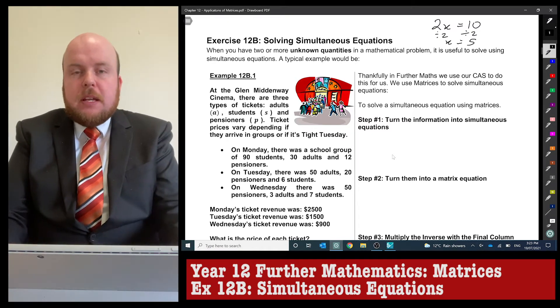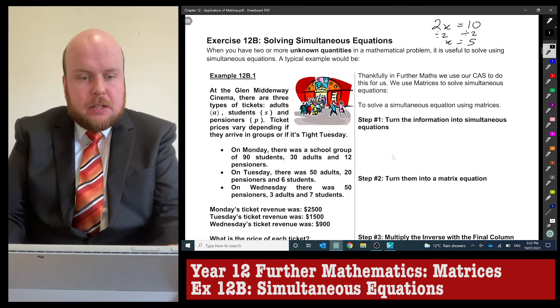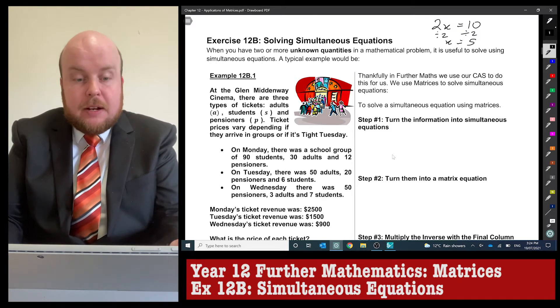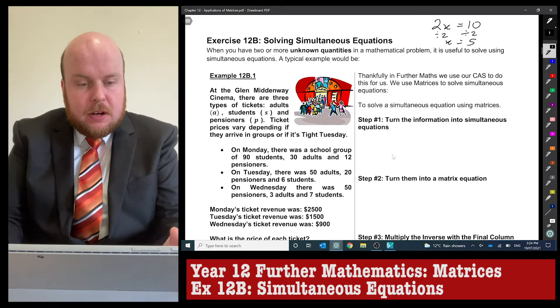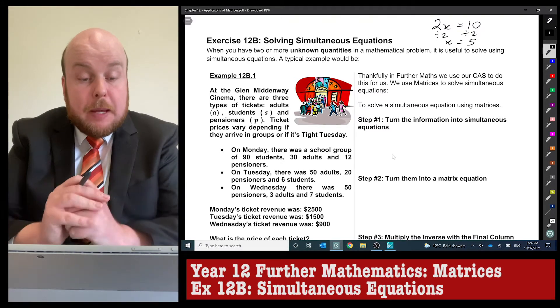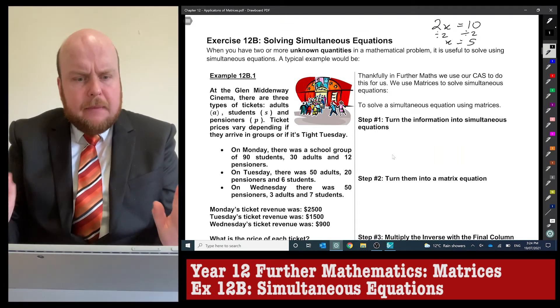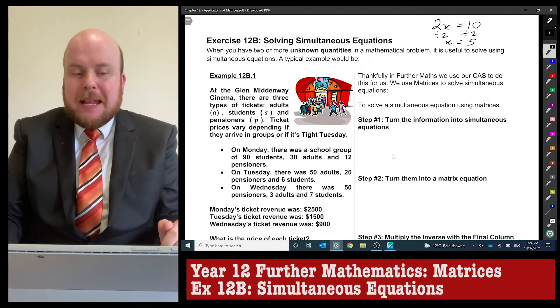We've got an example of a convoluted simultaneous equations problem where we're trying to find the number of adults, students, and pensioners to find the cost. For 12B.1 at the Glen Middenway Cinema, there are three types of tickets: adults A, students S, and pensioners P. Ticket prices vary depending on if they arrive in groups or if it's Tight Tuesday.